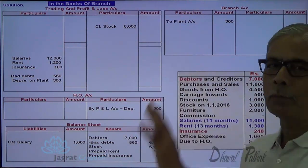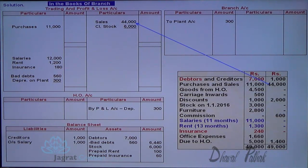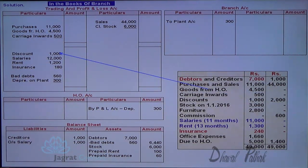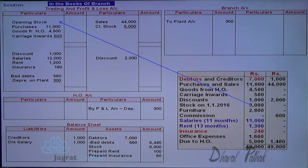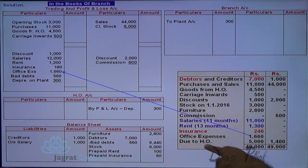Now copying trial balance items to their respective accounts: creditors go to the balance sheet liability side; purchases are debited to the trading account; sales are credited to the trading account; goods from HO are debited to the trading account like purchases; carriage inward is debited to the trading account; discount (debit) goes to profit and loss account debit; discount (credit balance of 2,000) is credited to profit and loss account; opening stock goes to trading account debit; furniture goes to balance sheet asset side; commission income is credited to profit and loss account; office expenses are debited to profit and loss account.